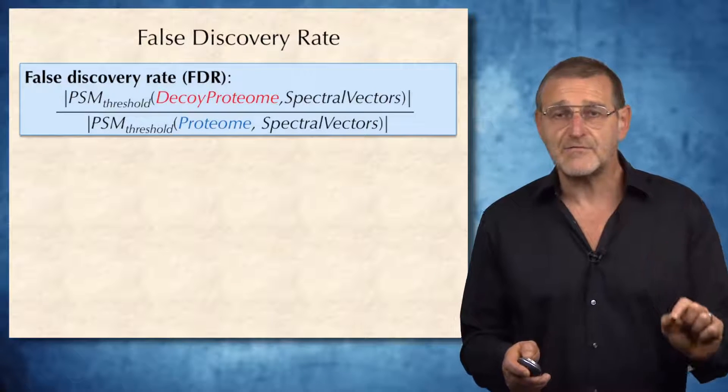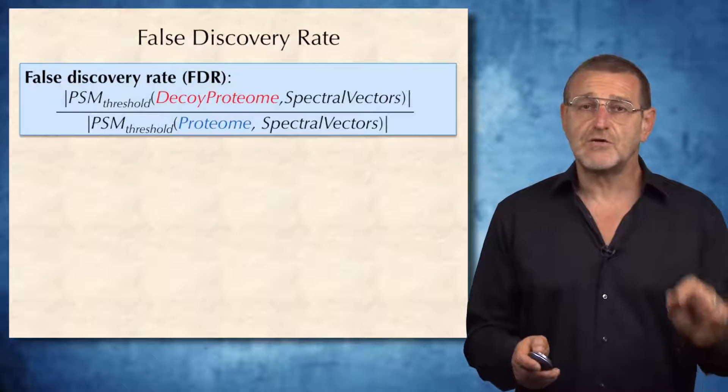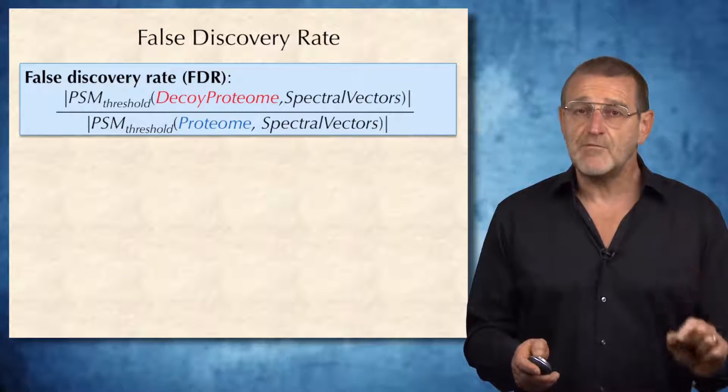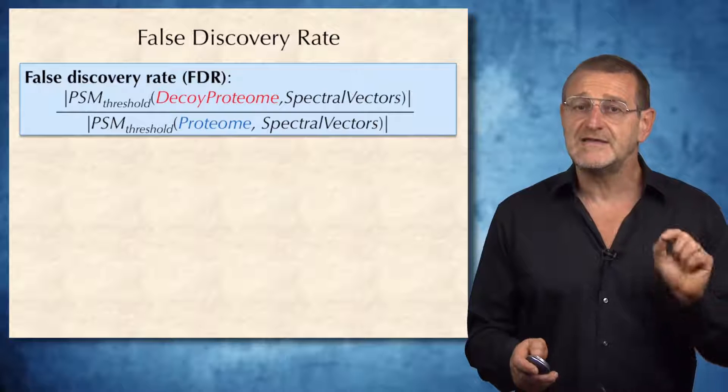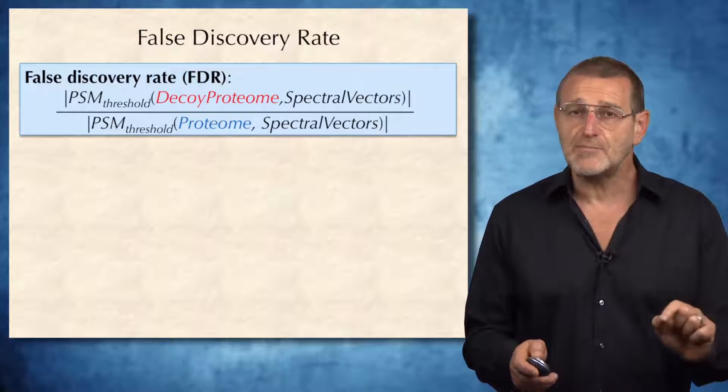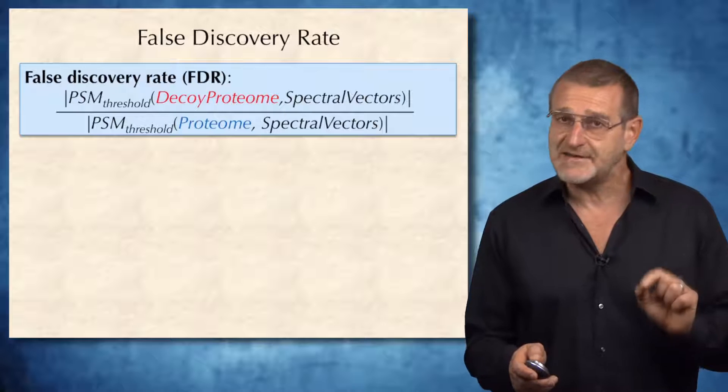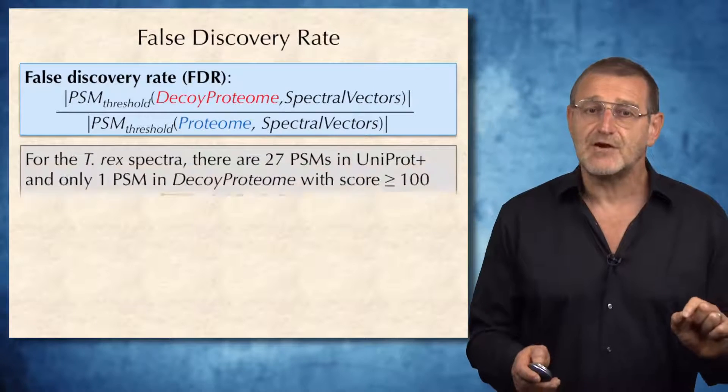And therefore, we define the notion of false discovery rate as simply the ratio of the number of peptide spectrum matches identified in decoy proteome over the number of peptide spectrum matches identified in the real proteome.